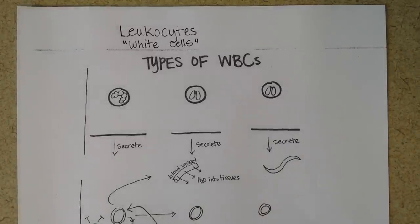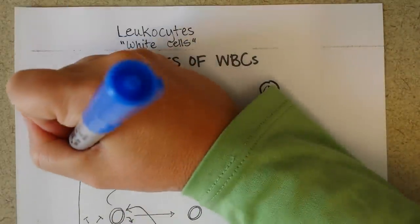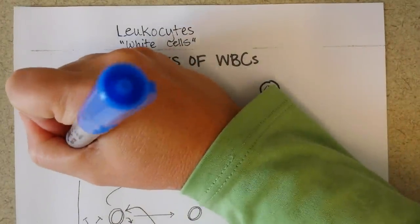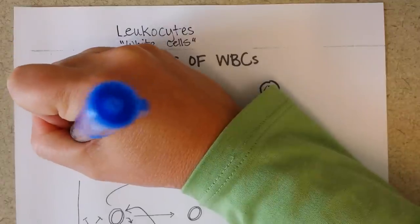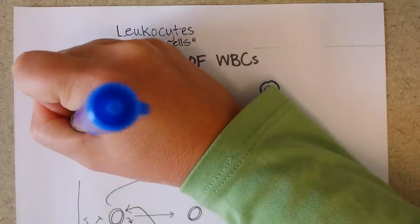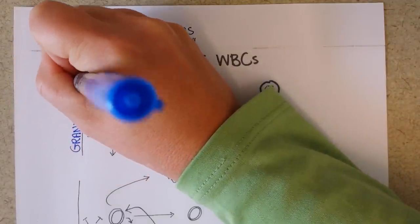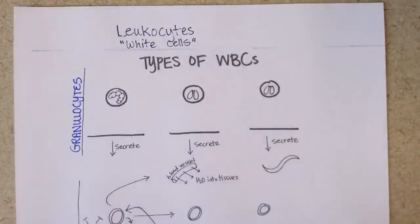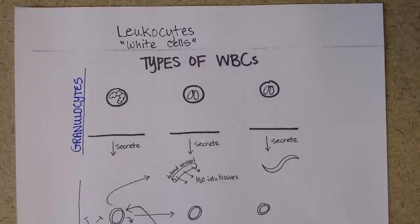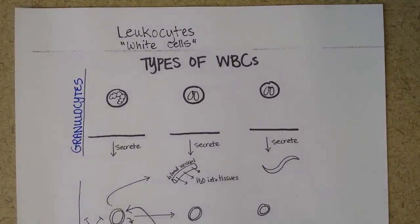The first category of white blood cells that I'm going to talk about are granulocytes. Like the name sounds, they have granules containing chemicals that help you defend yourself from pathogenic invaders.